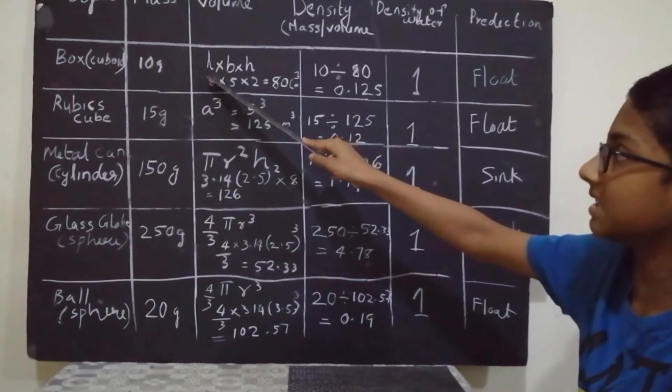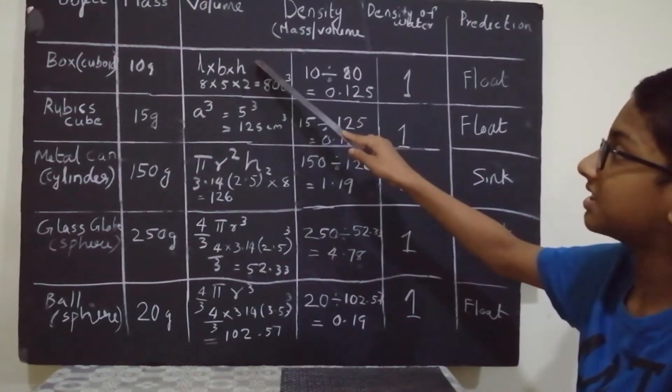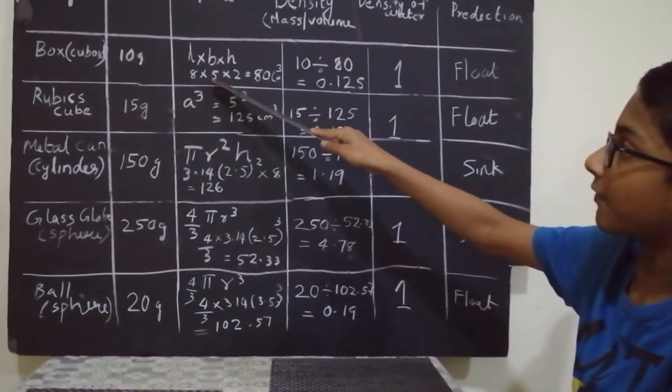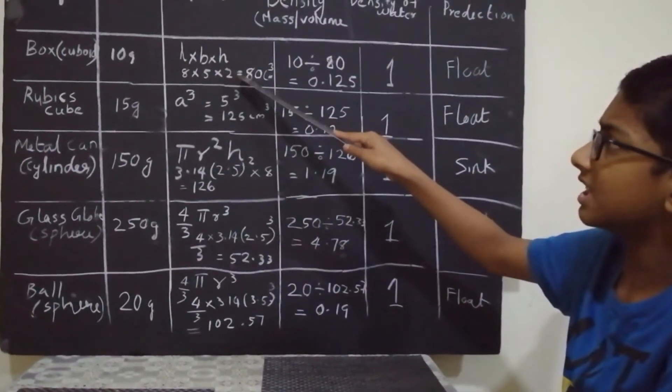Here, length is 8, breadth is 5, height is 2. Calculated together equals 80.